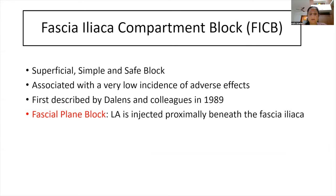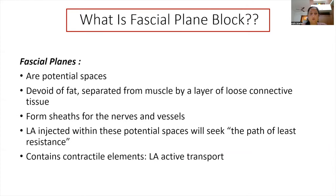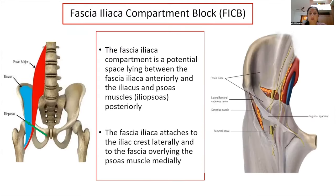Fascial planes are potential spaces devoid of any fat and are separated from muscle by a layer of loose connective tissue. These form sheets for the nerves and vessels. Local anesthetic injected within these potential spaces seeks the path of least resistance, with the aim of targeting the nerves passing through those fascial planes.